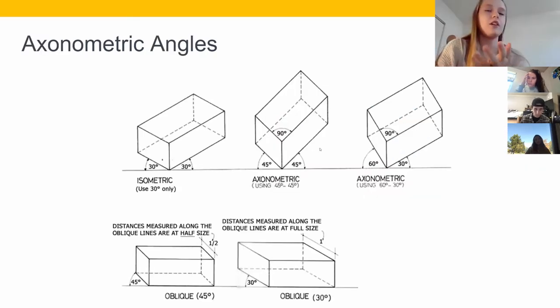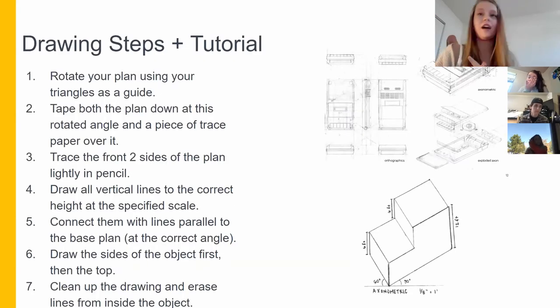The angle that you align your axon drawing at when you're rotating your plan to begin with will change the view that you get. So if you do an isometric which is just rotated 30 degrees and then 30 degrees, or if you do an axonometric that is 45-45, I typically like to do 30-60 because it allows a bit of an angled view that still allows you to see most of the drawing. So I'm going to go through some of these steps on how to draw an axon drawing more specifically.